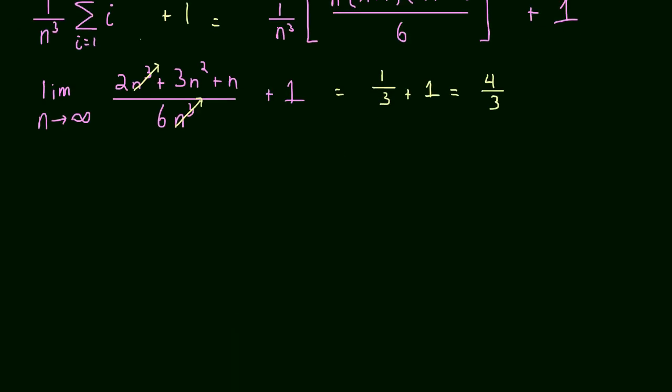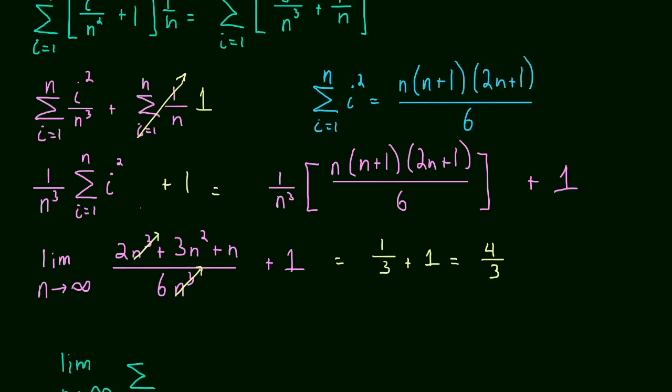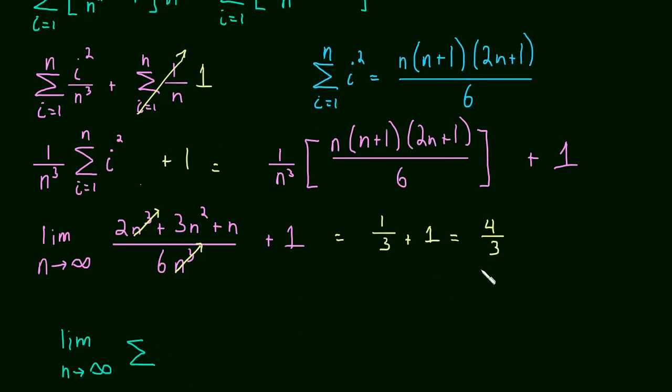And oftentimes, just as a liner note to this video, you'll see the limit written out front just to begin with. The limit as n goes to infinity of the sum. It's the same thing. I chose to save it to the end just so that you wouldn't get caught up in the limit part. You could evaluate the sum separately and take the limit at the end. Okay, I hope this helps. See you in the next video.